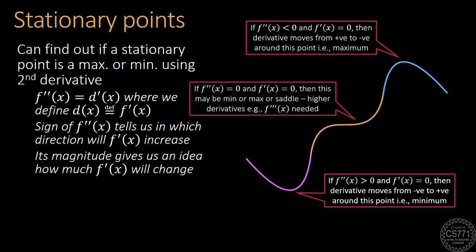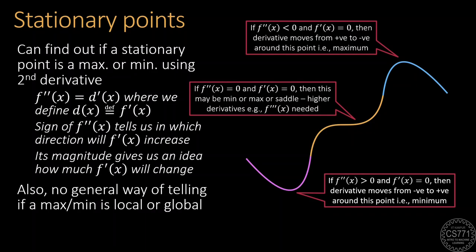Saddle points are weird creatures where neither of these two possibilities takes place. Also note that there is no general algorithm or recipe to distinguish between local minima and global minima or local maxima and global maxima except in special cases.